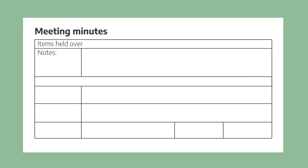In the next part of our template we have 'Items to be Held Over'. This section can be used to make notes about things that come up in the meeting but are not related to the agenda. It may be necessary to arrange a separate meeting if many items are held over. Next we have 'Any Other Business', and this part should have the same three sections as each agenda item.